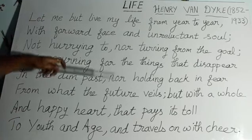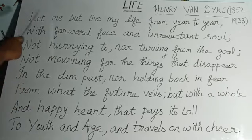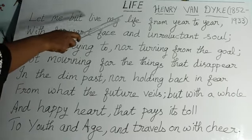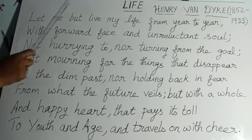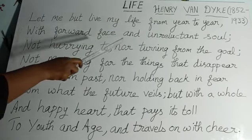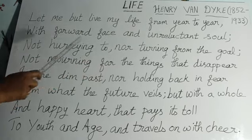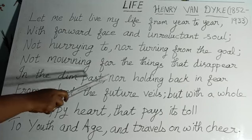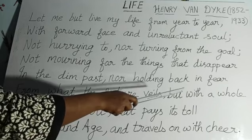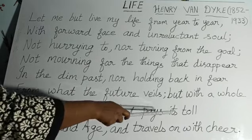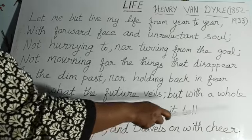Now let's look at the first 8 lines — the first stanza. 'Let me but live my life from year to year, with forward face and unreluctant soul. Not hurrying to, nor turning from the goal. Not mourning for the things that disappear in the dim past. Nor holding back in fear from what the future veils. But with a whole and happy heart that pays its toll to youth and age, and travels on with cheer.'